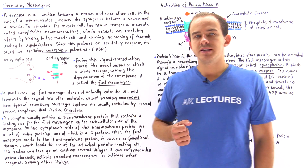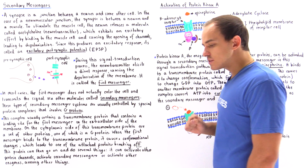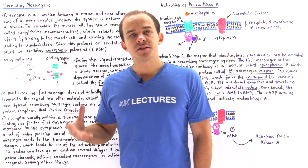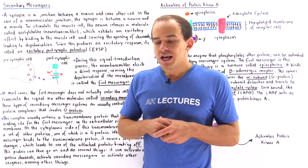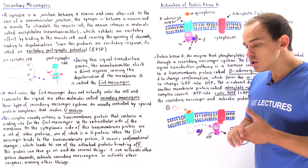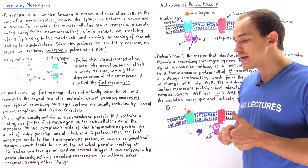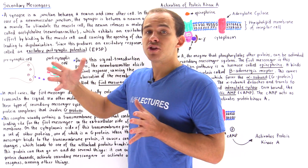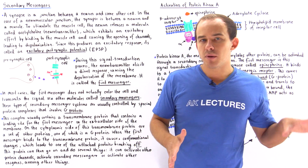Previously we discussed the details of a synapse, and the synapse we focused on was the neuromuscular junction — the synapse between a neuron and a muscle cell. At the neuromuscular junction, the signal transduction process takes place, meaning we pass down the electrical signal from the neuron to our muscle cell.